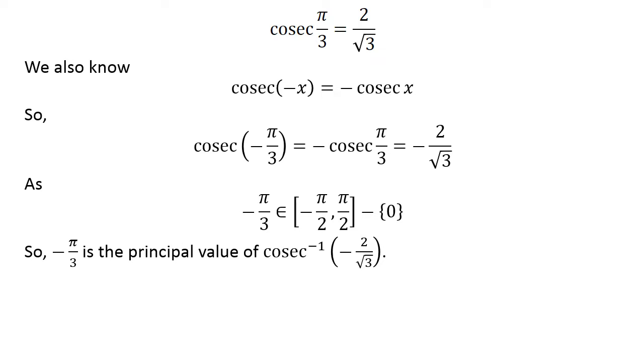So, minus pi upon 3 is the principal value of inverse cosecant of minus 2 upon square root of 3.